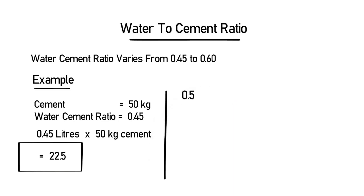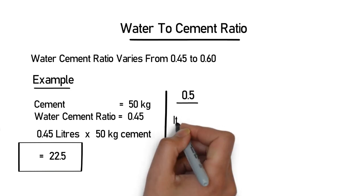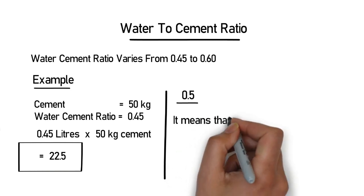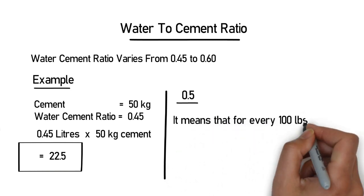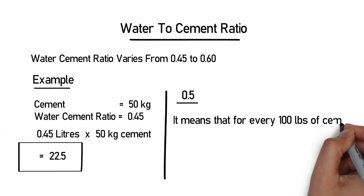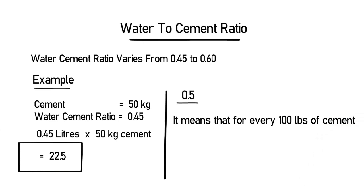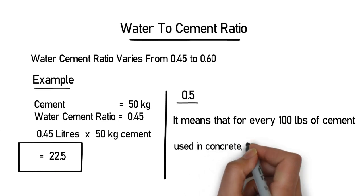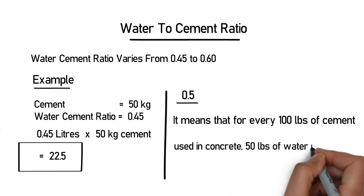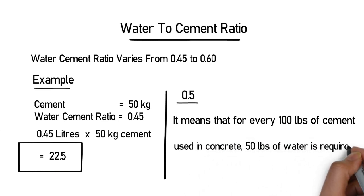Now let's discuss another example. If the ratio is 0.5, it means that for every 100 pounds (lbs) of cement used in the concrete, 50 pounds of water is required to be added.